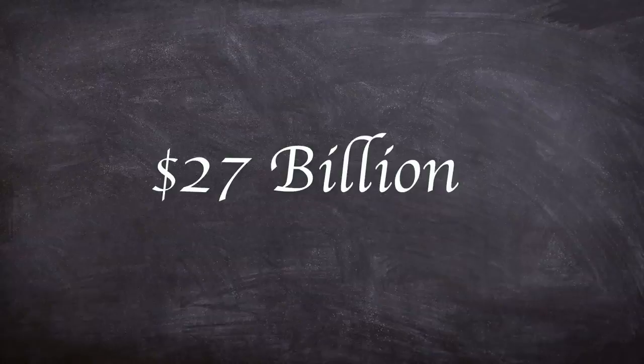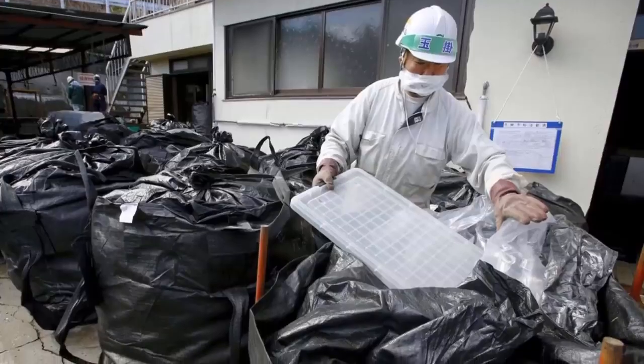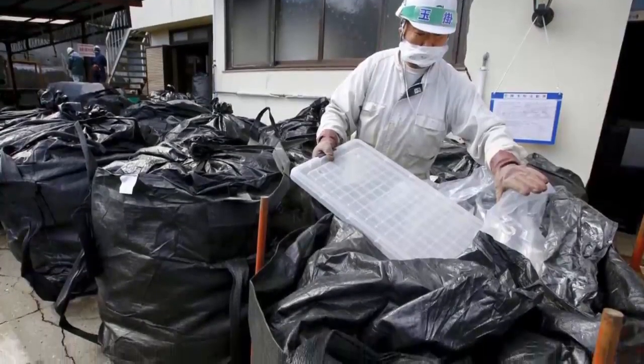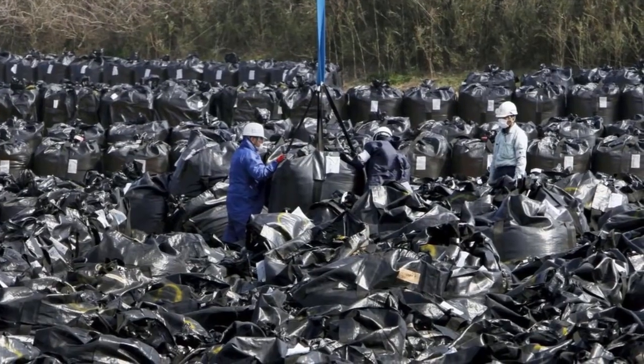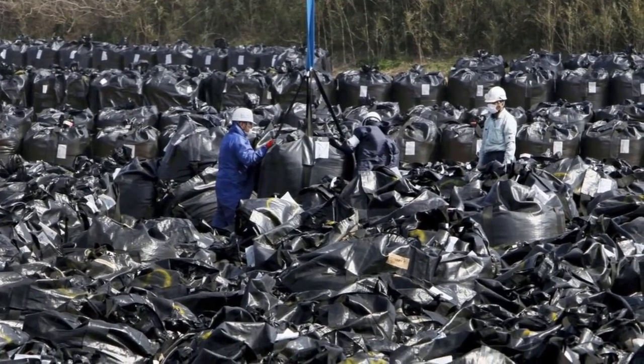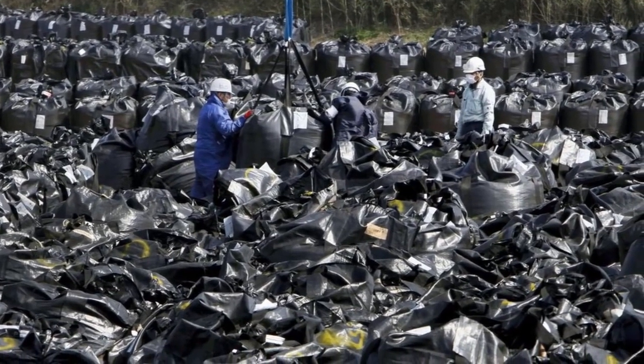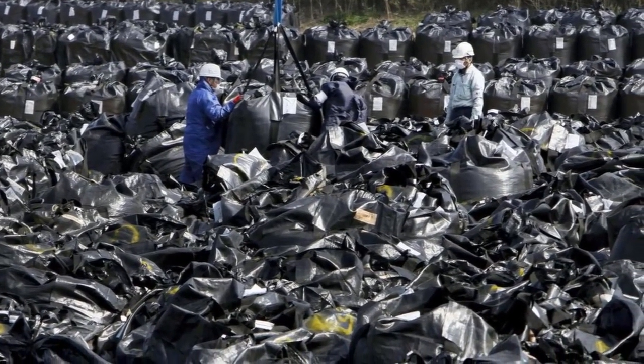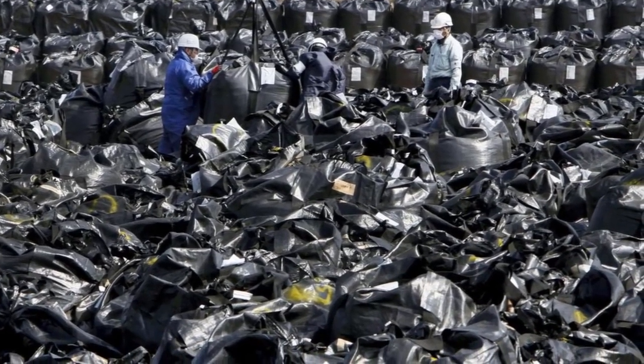The Japanese government so far has put $27 billion into cleaning up the mess, with around 75,000 workers scrubbing the roads, walls, roofs, gutters, and drains. Around 600 million cubic feet of grass, trees, and topsoil have been removed and stuffed into millions of black bags. But the road to completion of decommissioning and decontamination left by the 2011 disaster will take many more decades until it's finished.